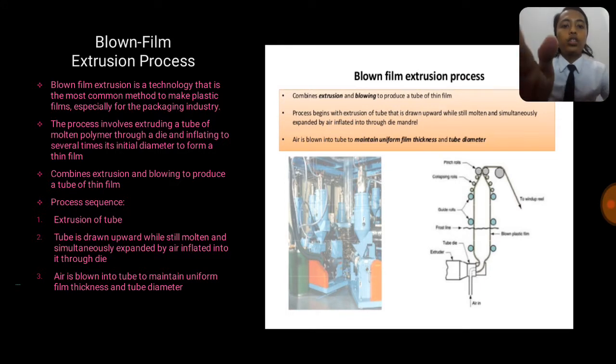For the blown film extrusion process, blown film extrusion is a technology that is the common method to make plastic film, especially for the packaging industry nowadays. The process involves extruding a tube of molten polymer through a die and inflating to several times its initial diameter to form a thin film. Combined extrusion and blowing to produce a tube of thin film. This is the process sequence of the blown film extrusion process.